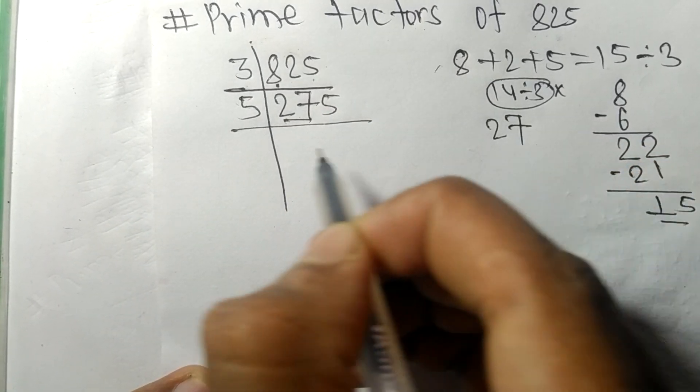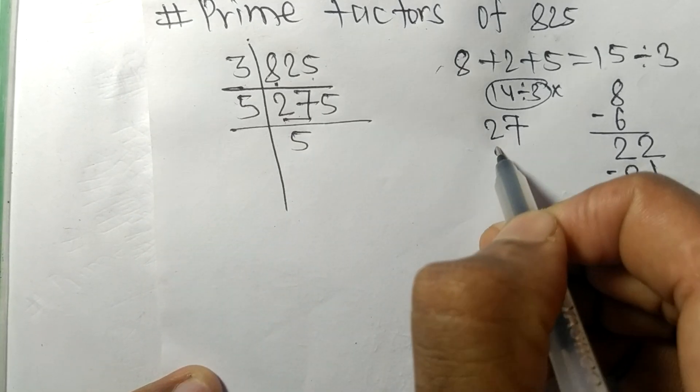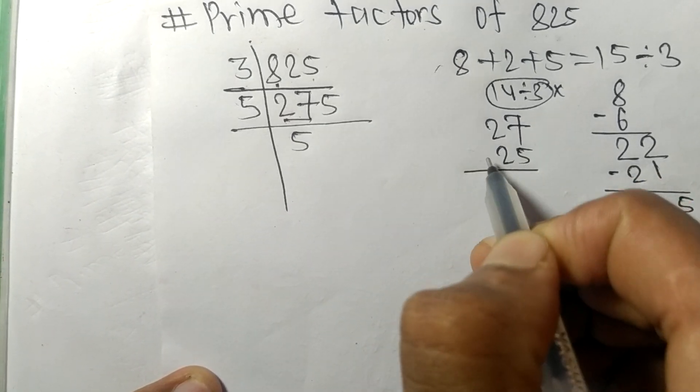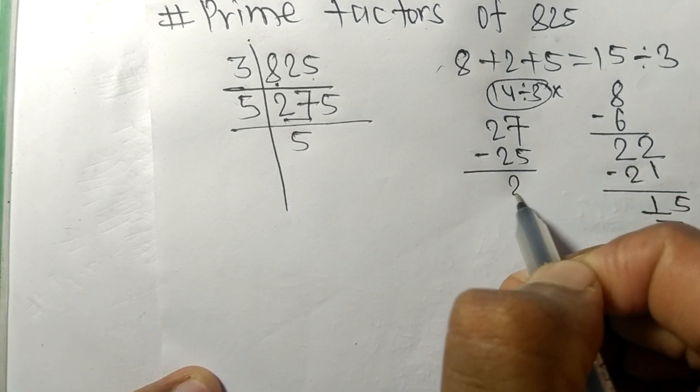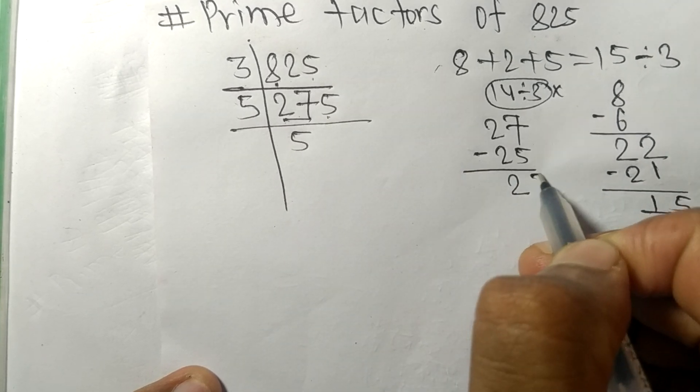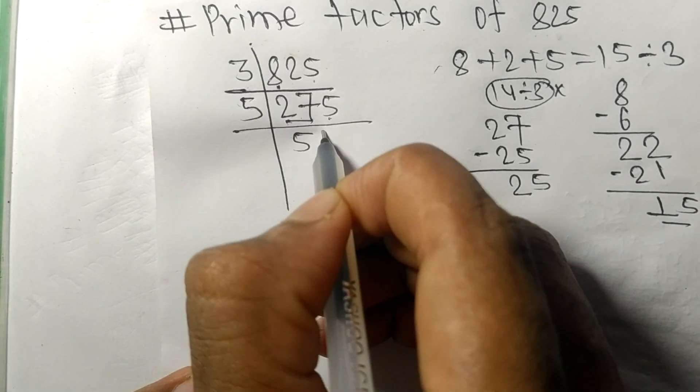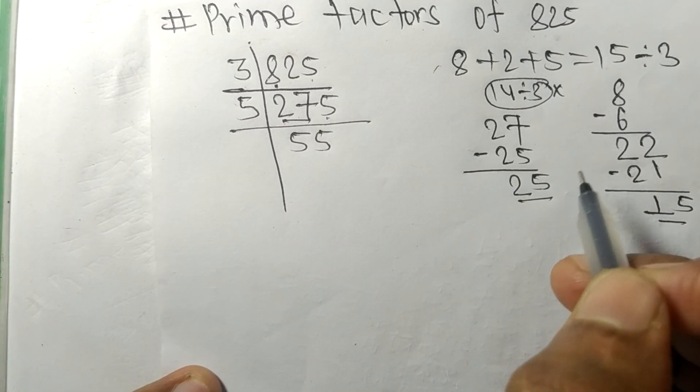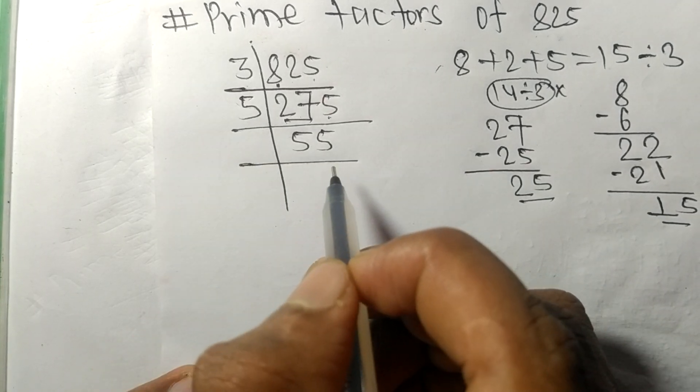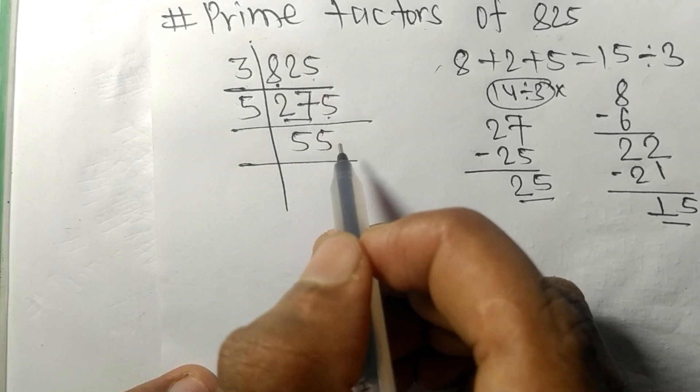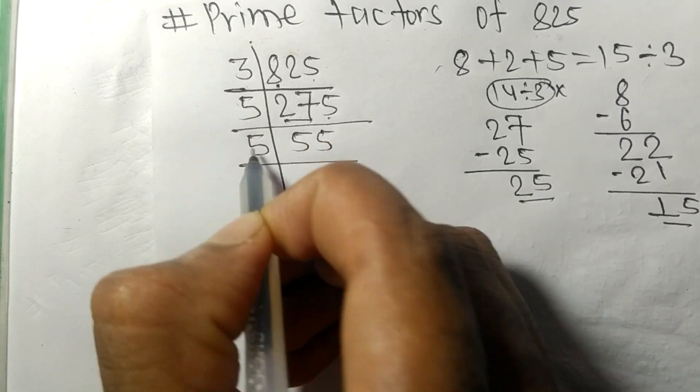First we have 27, so 5 times 5 is 25, on subtracting we get 2. And this 5 makes 25. 5 times 5 is 25, so now we got 55 which is exactly divisible by 5.